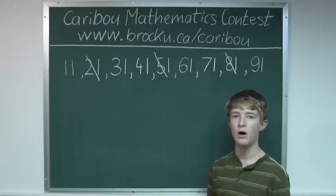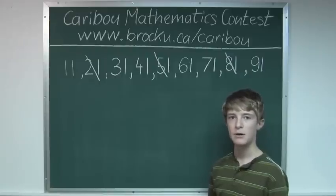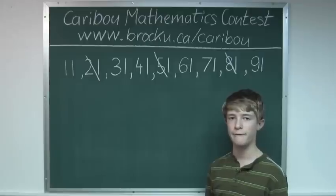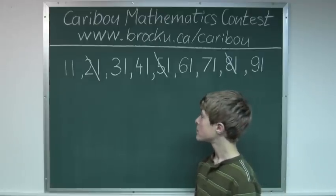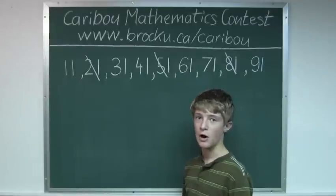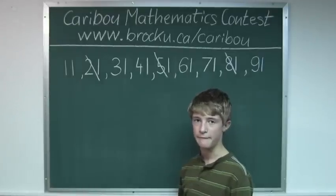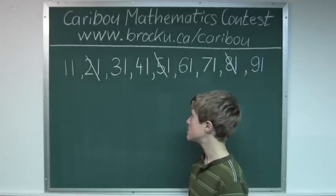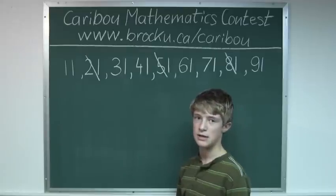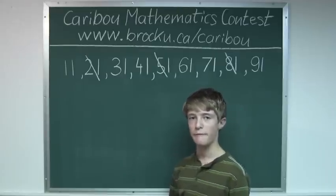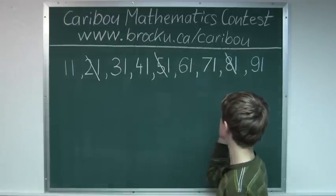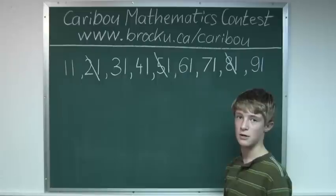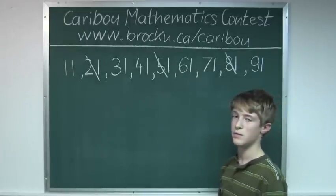We have to test all the prime numbers. We start with five, the next prime number. A trick to know if a number is divisible by five is to look at the last digit and see if it's zero or five. None of these numbers have zero or five as their last digit, so they aren't divisible by five.